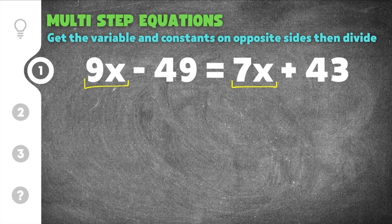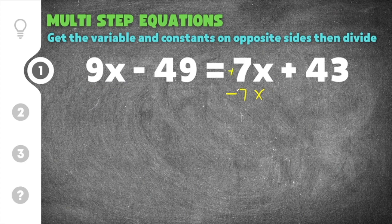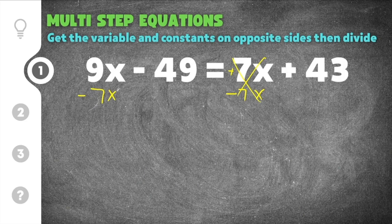I need the x terms together, so I'm going to move the 7x over to the left side with the 9x. I'm going to subtract 7x because this is a positive 7x and the opposite of positive 7x is minus 7x. Whatever you do to one side you also have to do to the other, so I subtract 7x from both sides. The positive and minus 7x cancel on the right, and on the left 9x minus 7x is 2x.